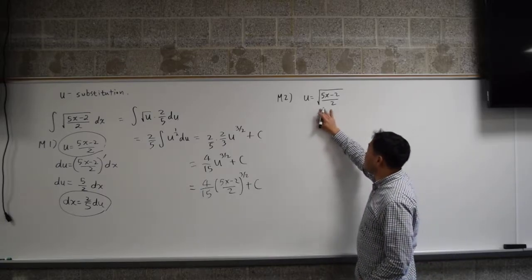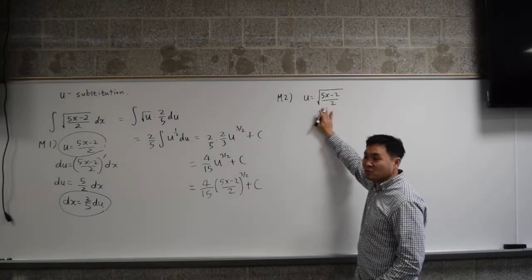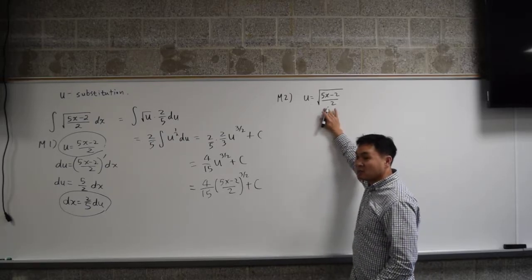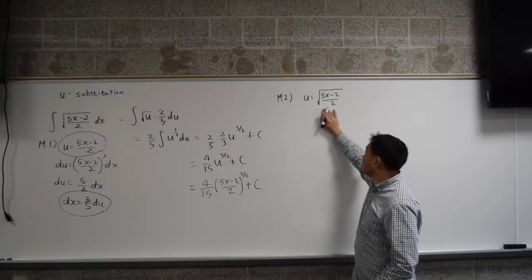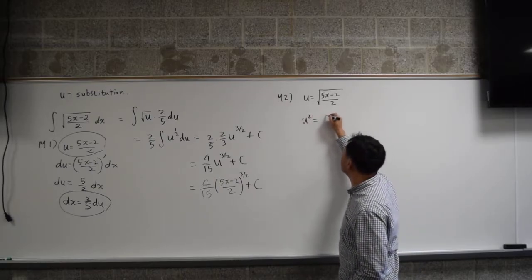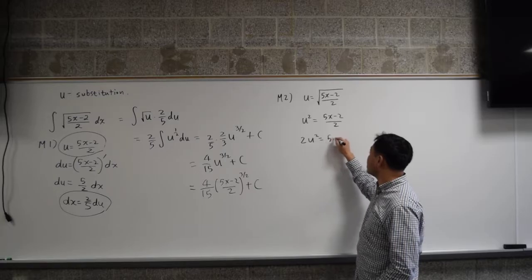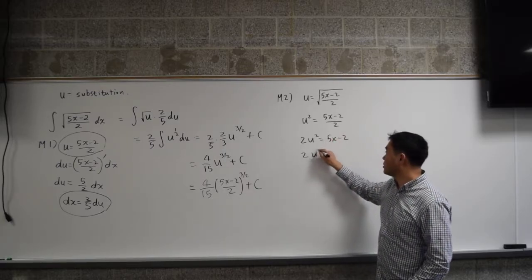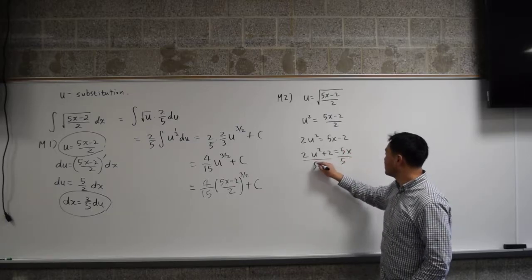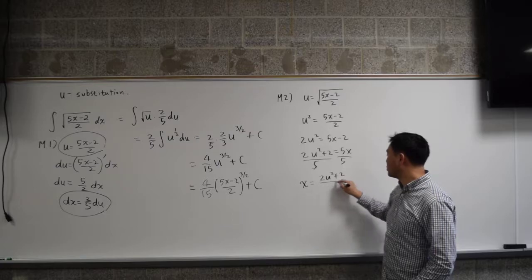The trouble with having this entire thing as u is that when you try to differentiate it, you have to use the chain rule that's really painful. So instead of doing it that way, if you have u equal to something complicated, a nice thing you can do is to solve for x before you differentiate. So we're going to square both sides, multiply by 2, add 2, divide by 5. So now you have this result that x is equal to 2u squared plus 2 over 5.